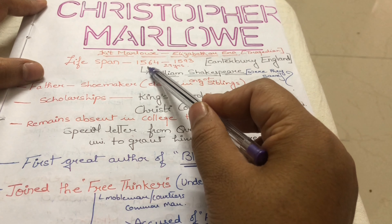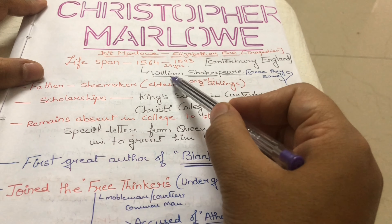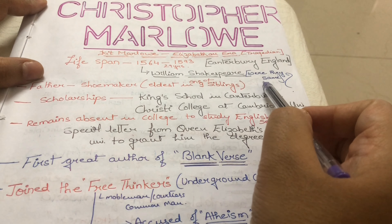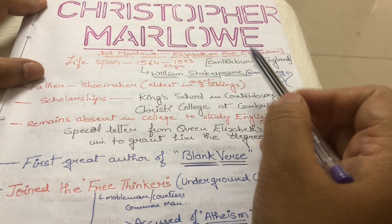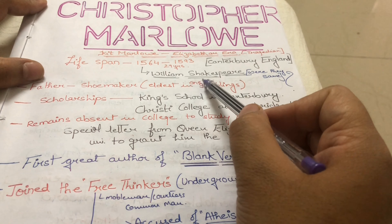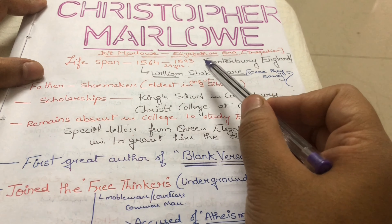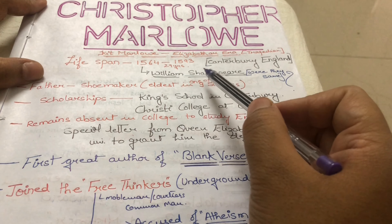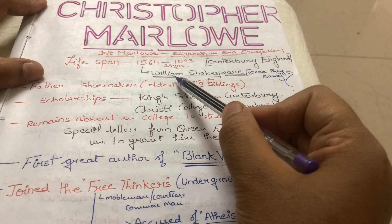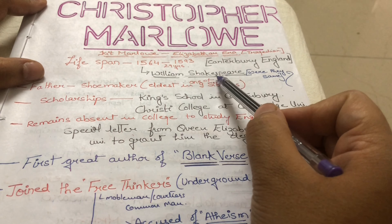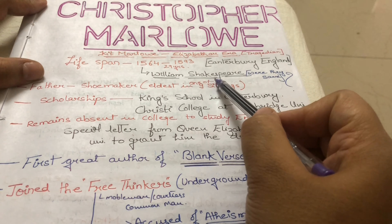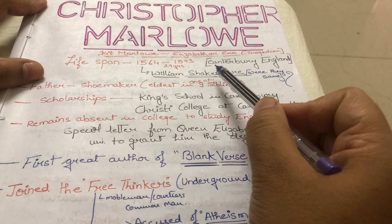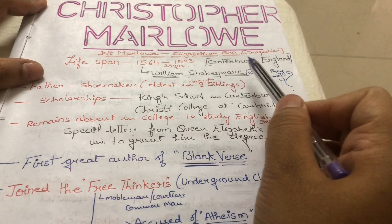When we see his birth year, we remember that William Shakespeare was also born in the same year. So there was a controversy — some people thought that Christopher Marlowe was William Shakespeare. Some people said that Marlowe faked his death and later wrote under the name William Shakespeare. This confusion is still in our minds.